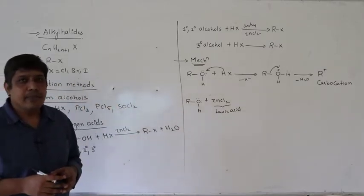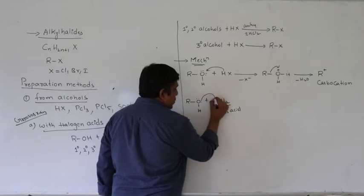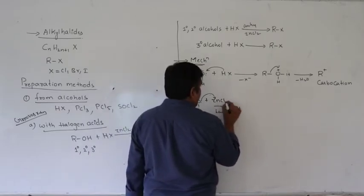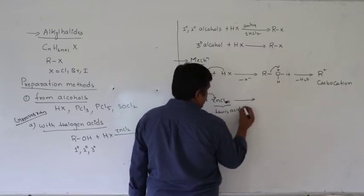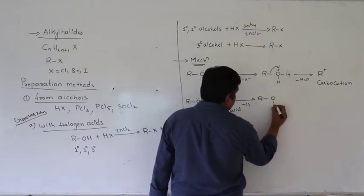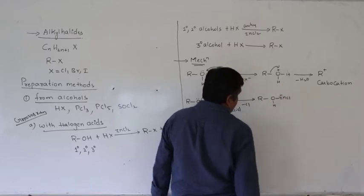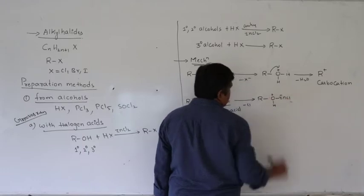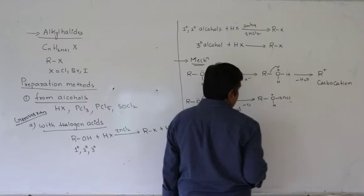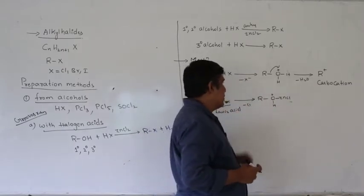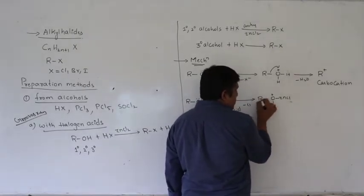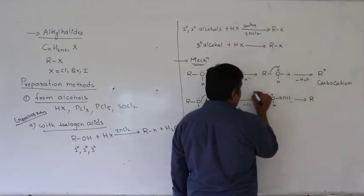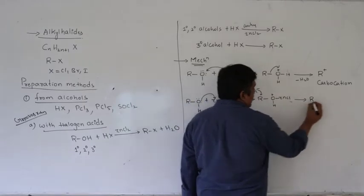Zinc chloride acts as a Lewis acid — it is an electron pair acceptor. The lone pair on oxygen is donated to the empty orbitals of zinc. One of the chlorines is removed as Cl minus. So we get R-OH-ZnCl, and zinc accepts the electron pair readily because of its Lewis acidic character. This makes it easy to break the carbon-oxygen bond.